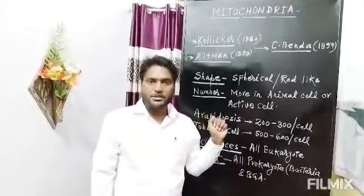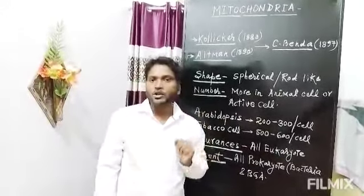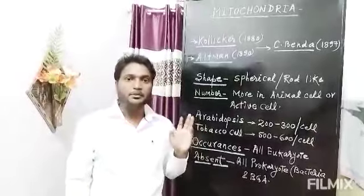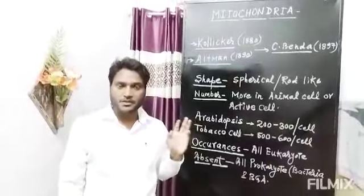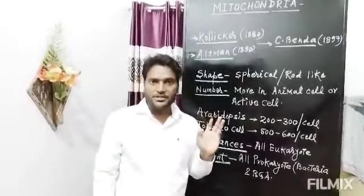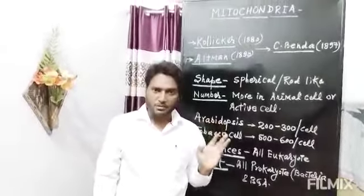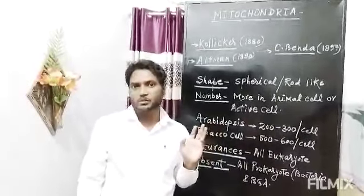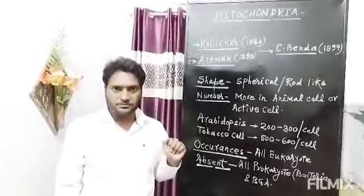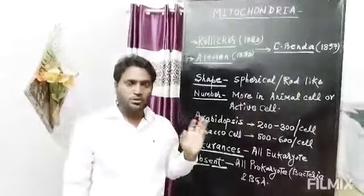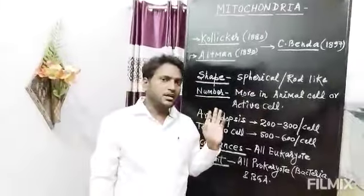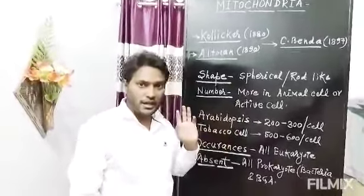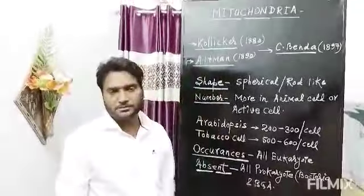That is, the difference between prokaryote and eukaryote, difference between plant cell and animal cell, ultra-structure of ribosome, Golgi body, endoplasmic reticulum and their functions. Today we will start a new topic that is known as ultra-structure and function of mitochondria.